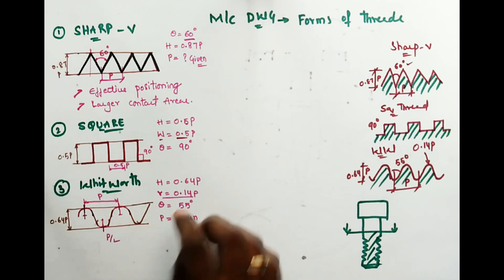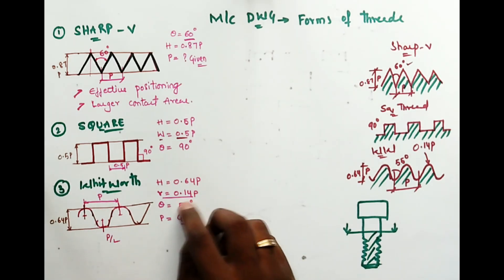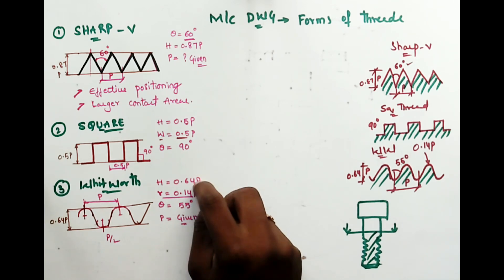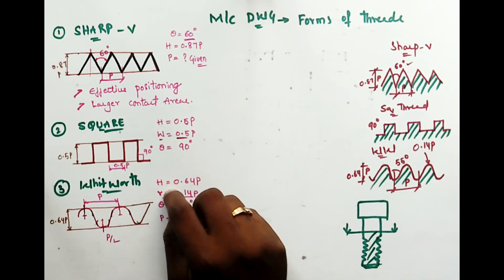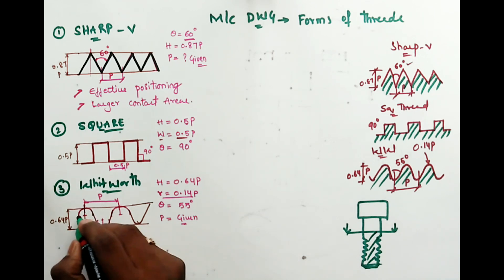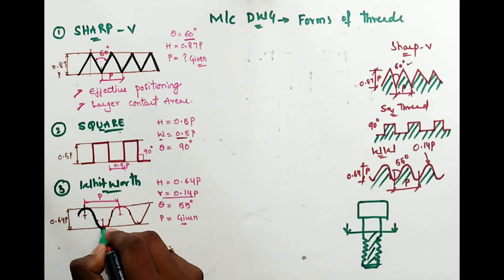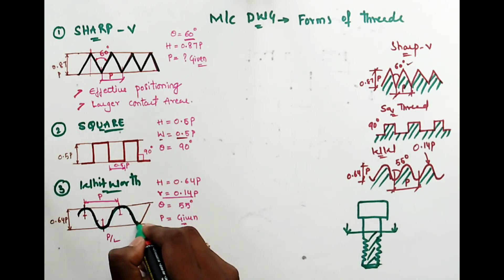Fourth: buttress thread. Buttress thread is a combination of V-sharp and square thread — combining these two gives you buttress thread. It has the ability to transmit power and also has low frictional resistance.